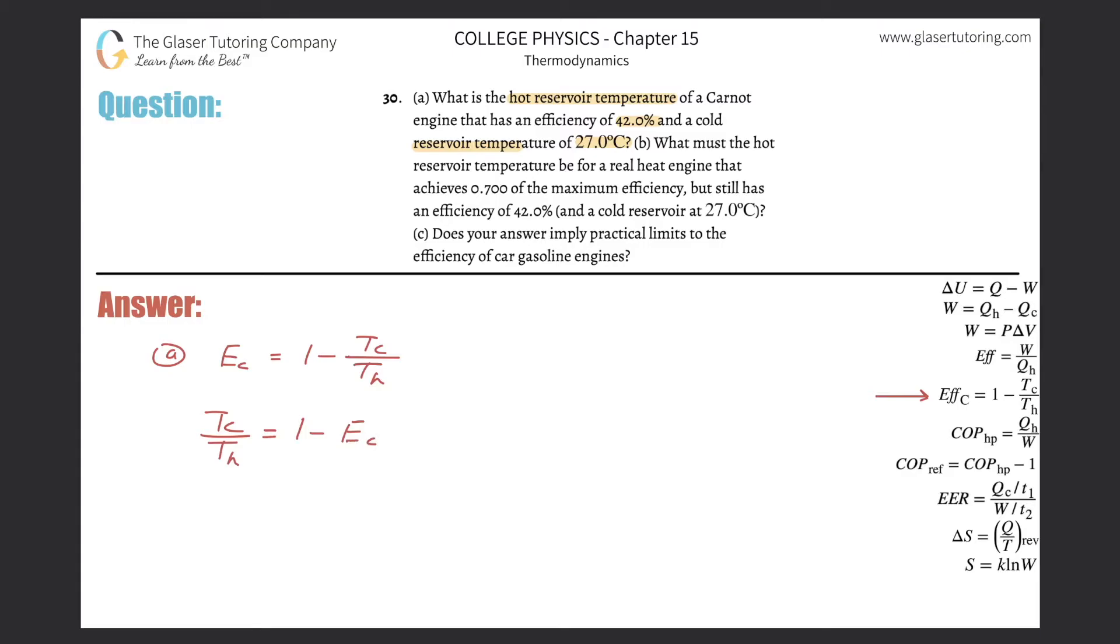So we have T sub C over T sub H will then be equal to 1 minus now the efficiency of the Carnot. And basically now all I need to do is take this value out of the denominator on the left, bring it up into the numerator on the right, and take this value that was in the numerator, remember this is really like over 1, and then bring that down into the left. We've seen that mathematical trick now many times, so hopefully that's good at this point.